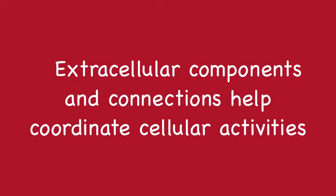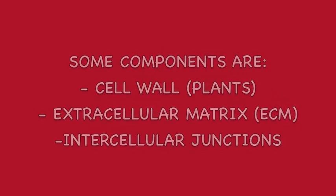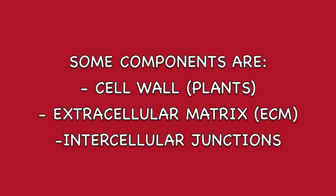Extracellular components and connections coordinate cellular activity. Some components are the cell wall, found in plants, the extracellular matrix or ECM, and intercellular junctions.